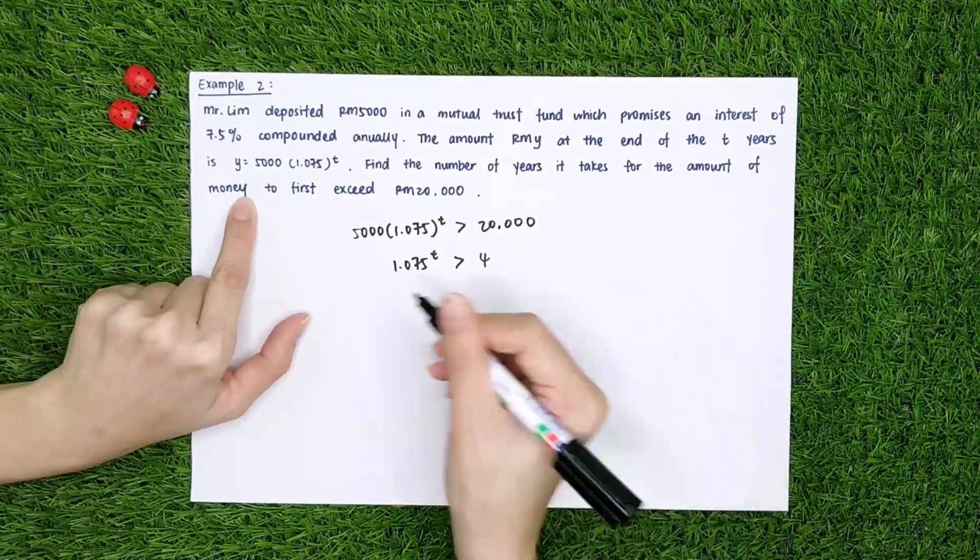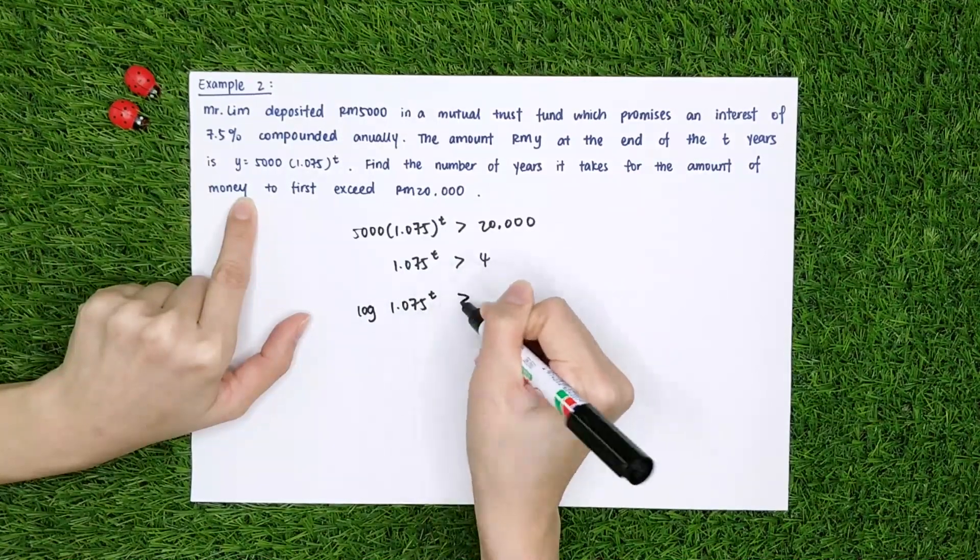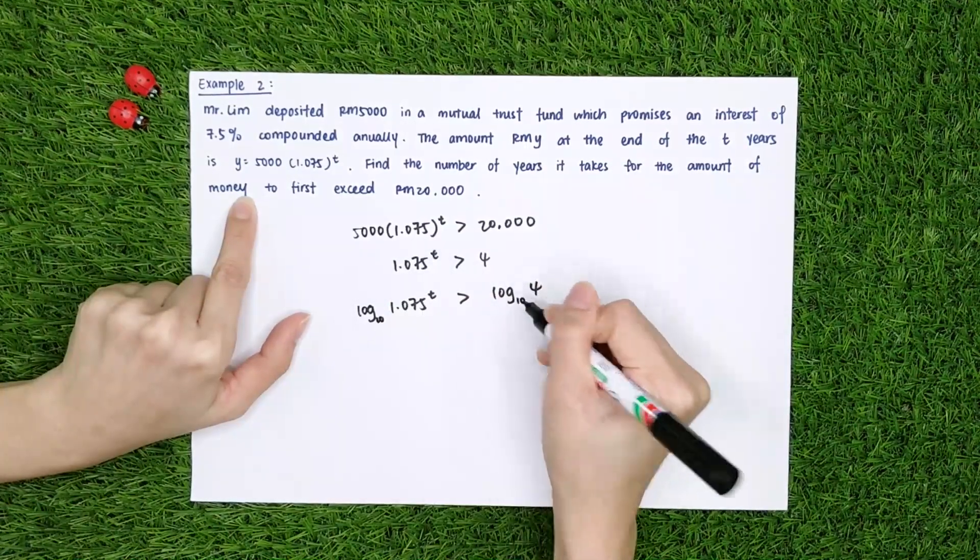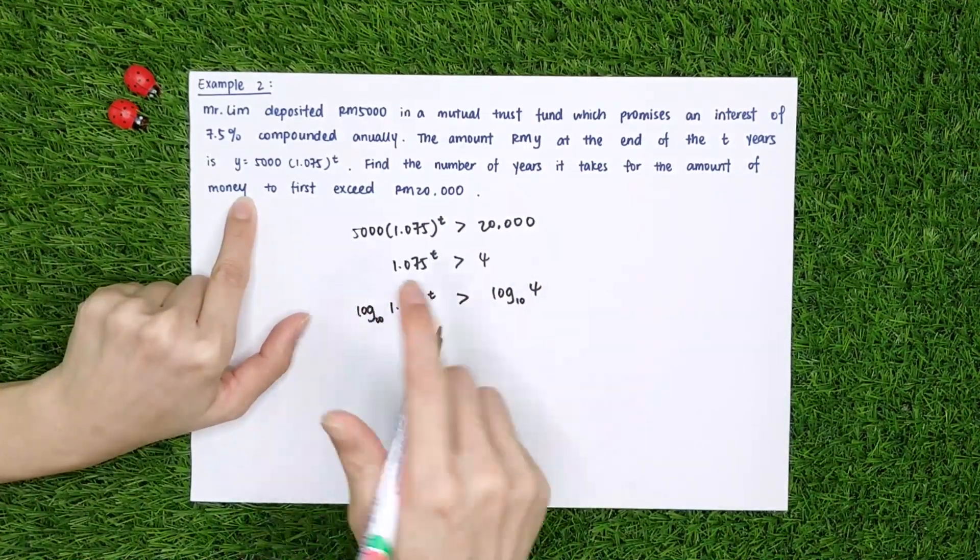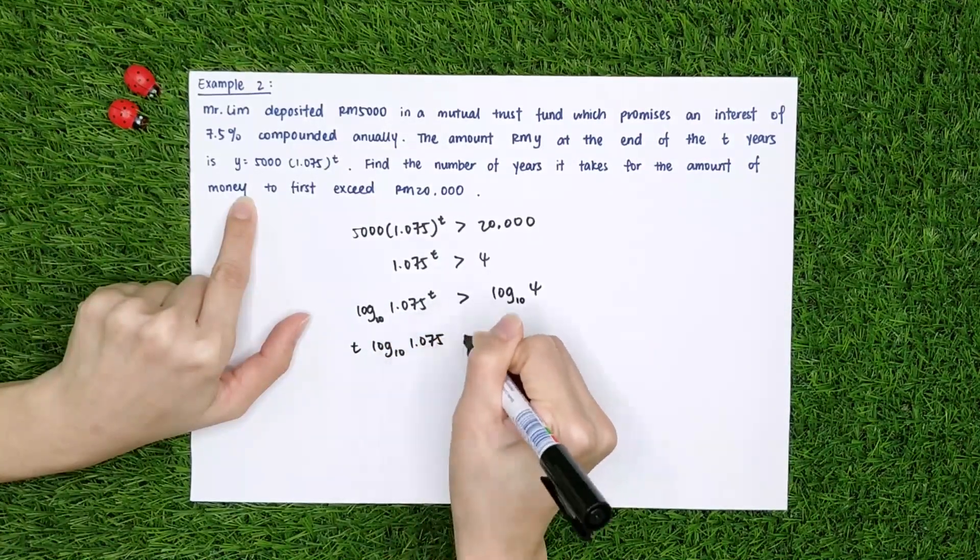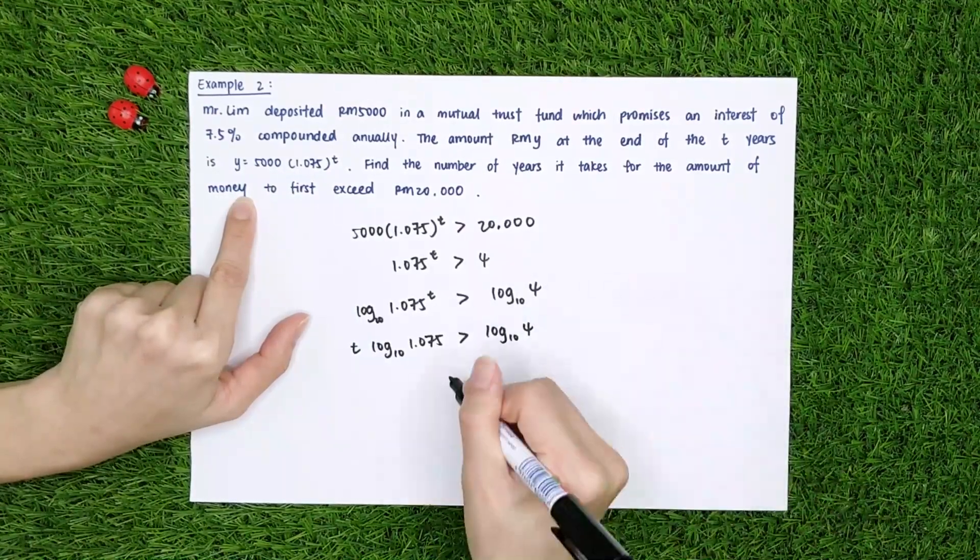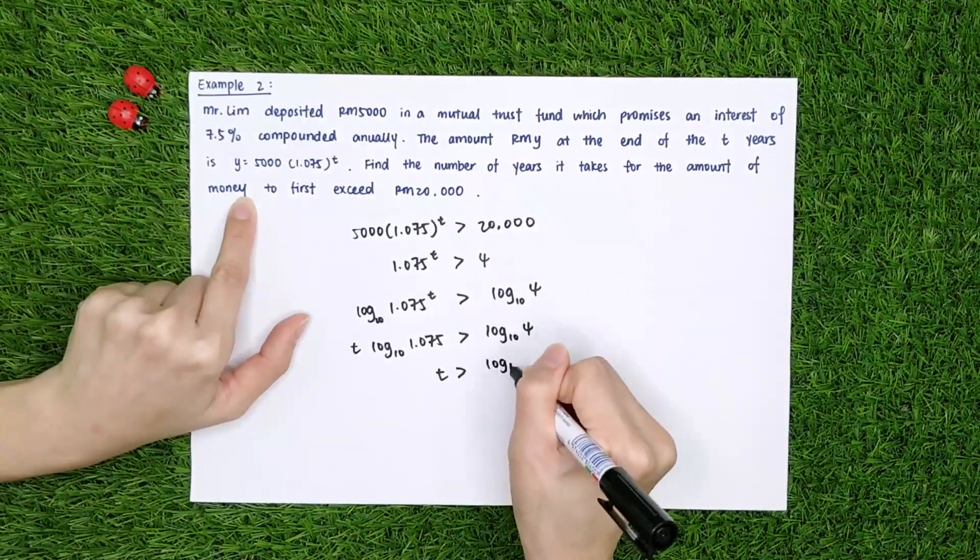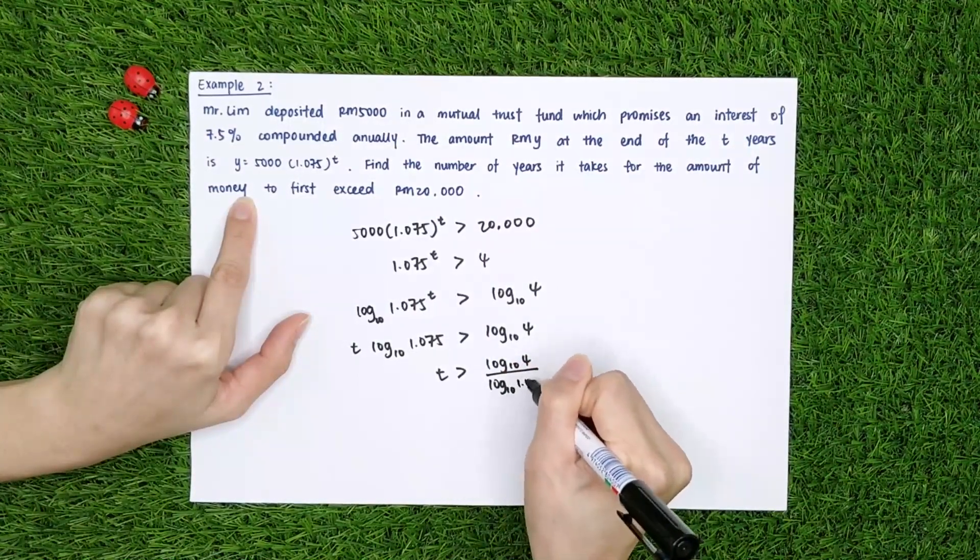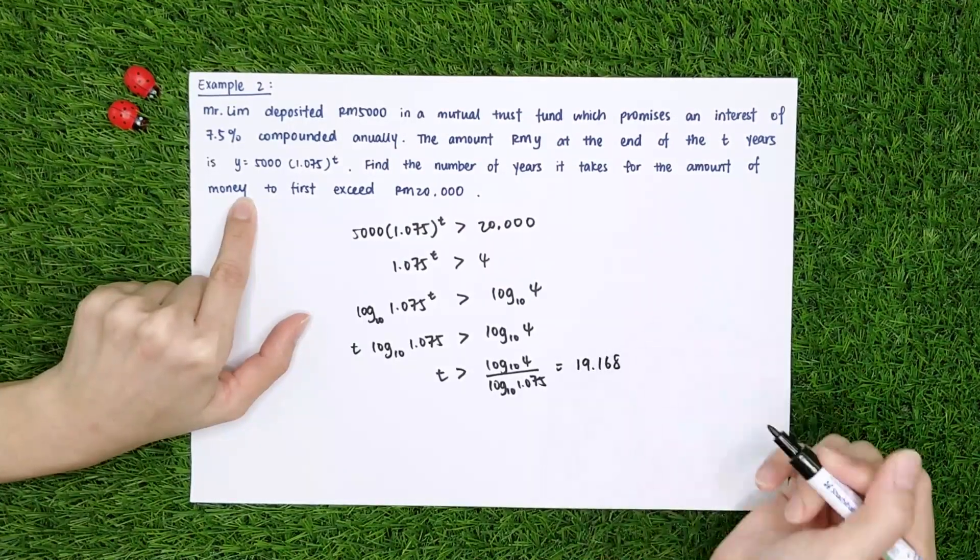Okay, so I will log both sides. I will get log 1.075 to the power of t more than log 4. So I will use the base 10 here. Now I can move the t to in front. t log 10 of 1.075 is more than log 10 of 4. Okay, so t, I can get the value of log 10 of 4 over log 10 of 1.075, which is equals to 19.168.